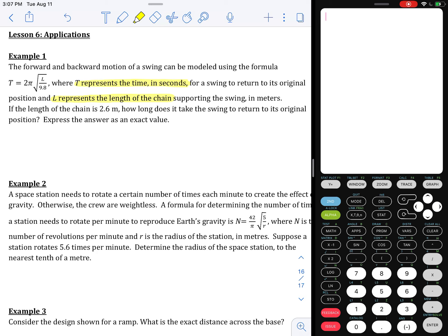We are then told that if the length of the chain is 2.6, how long does it take the swing to return to its original position? Express our answer as an exact value.